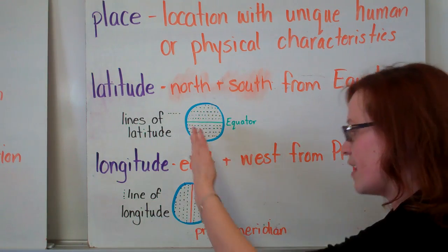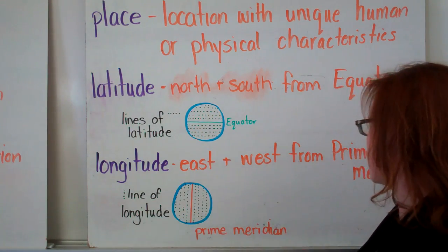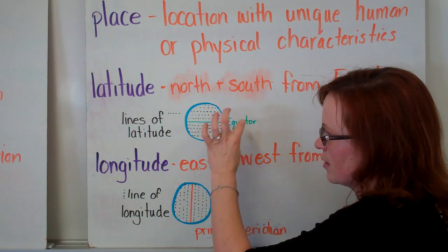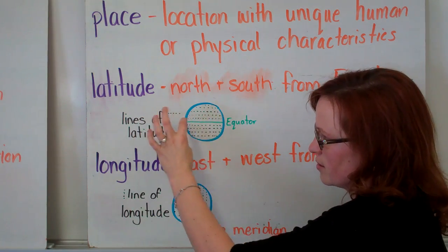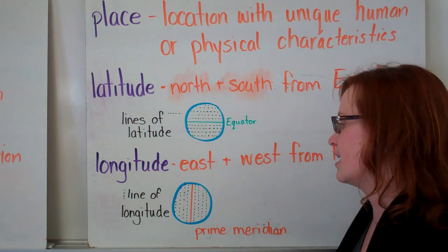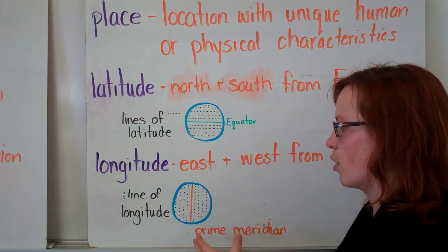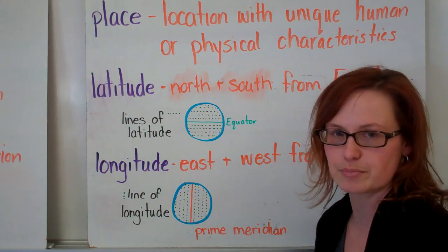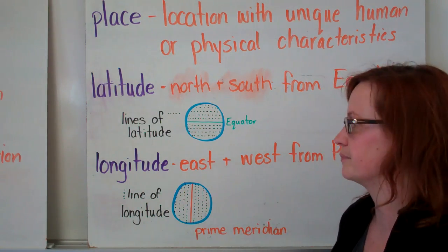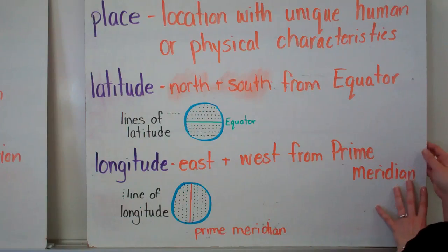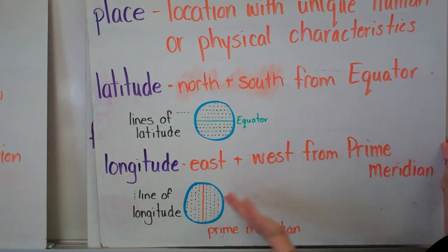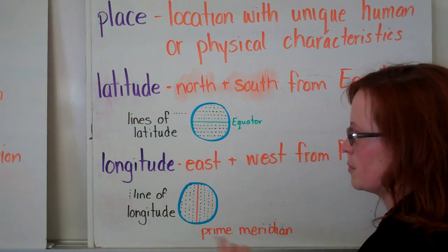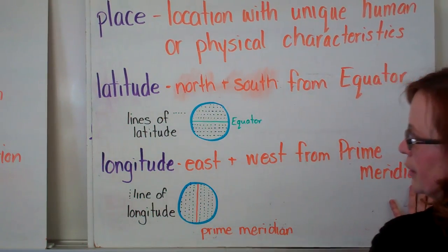Longitude. Lines of longitude go east and west from the prime meridian, which is where zero degrees is. The equator is zero degrees for latitude, and the prime meridian is zero degrees for longitude. They go east and west from the prime meridian. These help you find location, especially absolute location.